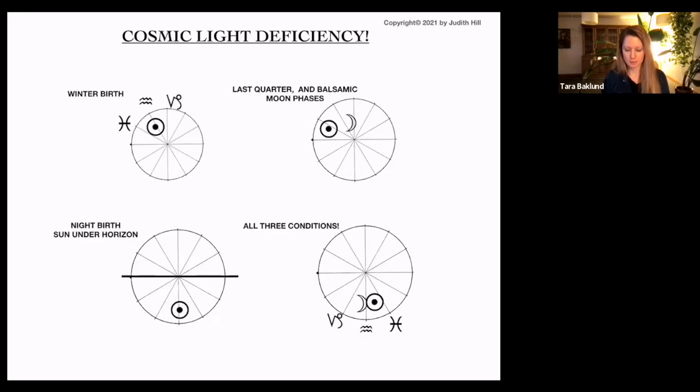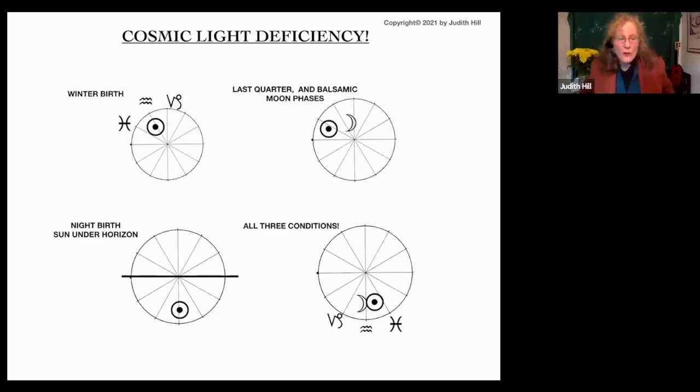This is very important. This is the thing I discovered years ago: dysthemic people tend to have cosmic light deficiency. We have light, we're made out of light, and the Jyotish of India say that...